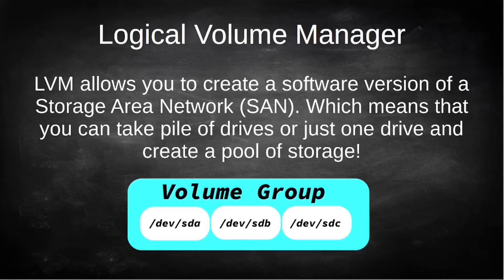Today we're going over LVM. LVM is a software version of a storage area network, which pretty much means you can take a pile of drives or just one individual drive and make a pool of storage. You can isolate that off and partition it into smaller bits and pieces. This is most helpful whenever you have a RAID device and you don't want to mount the whole entire RAID device on your Linux box. So if you have a couple terabyte RAID 5 drive, you can partition that off into smaller pieces without actually using the whole drive, and that's actually a safer option too.